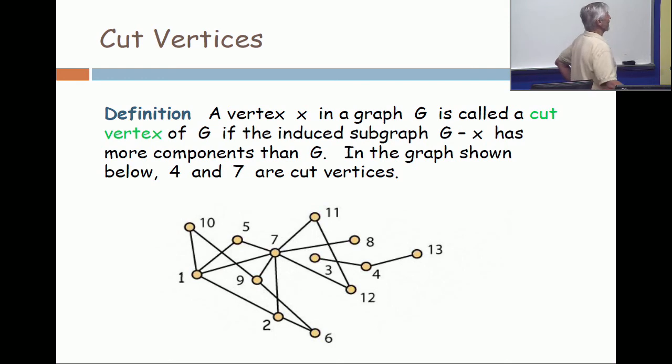All right, now look at the vertex 7. If you remove 7, then again you have more components left. In this case, when you remove 7, again you have three components. Removing one vertex can dramatically increase the number of components. Here it's just gone up by one, but it can go up quite a bit. There's no bound on the amount of the increase. But anytime you have a vertex whose removal increases the number of components, then you call it a cut vertex.